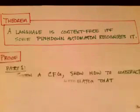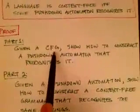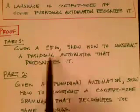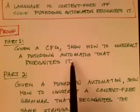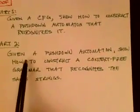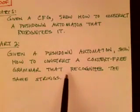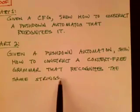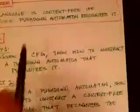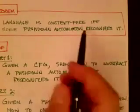The proof really has two parts. Given a context-free language, it has a grammar by definition. Given the grammar, we need to show how to construct a pushdown automaton that recognizes it — that's part one. Part two is that given a pushdown automaton, we can show how to reconstruct the context-free grammar that recognizes the same language. Part one and part two are converses; it's an if-and-only-if theorem.